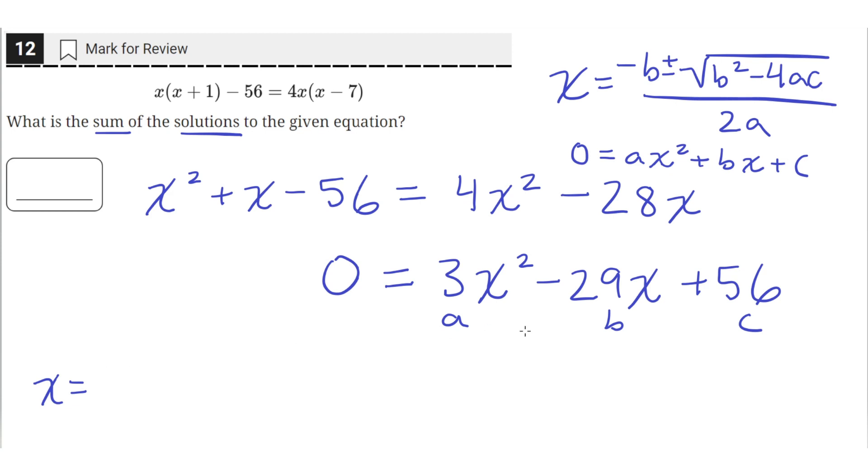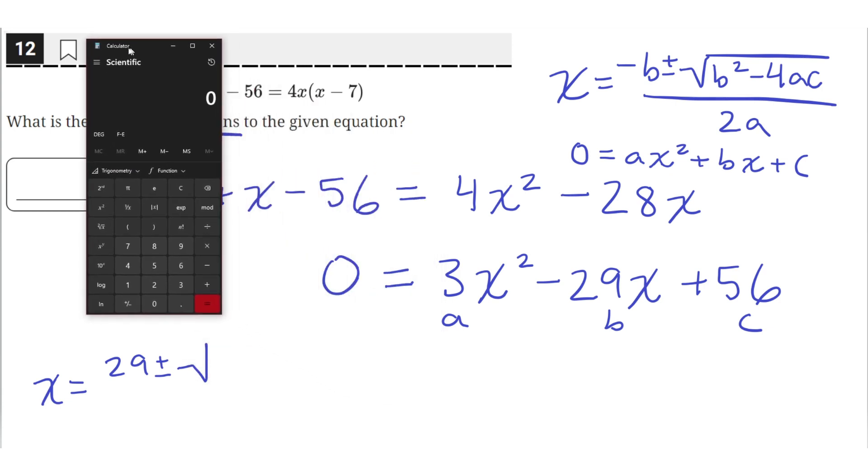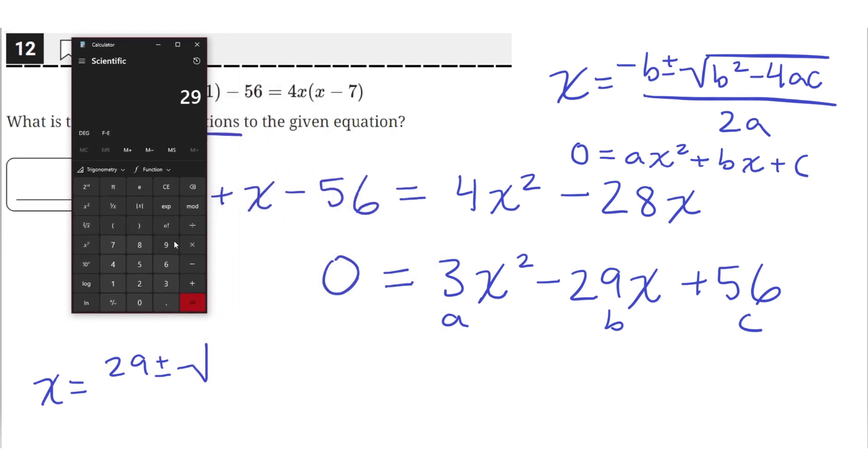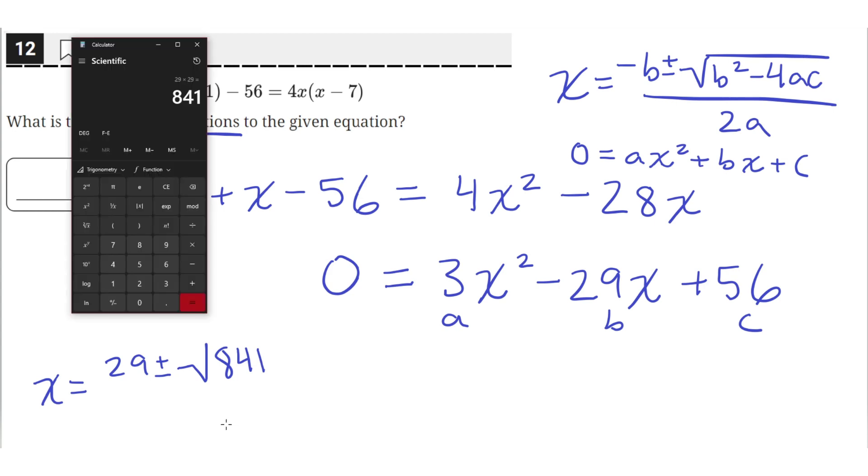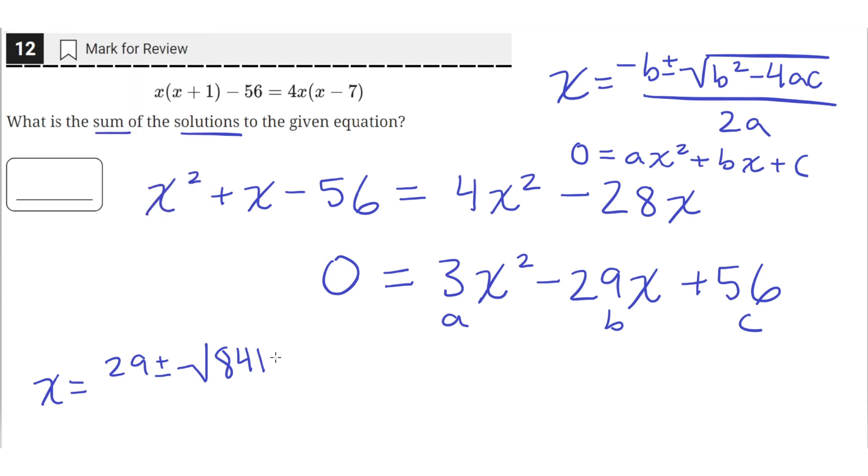Negative b, so negative of negative 29 is just 29 plus or minus square root of b squared. Using our calculator, 29 squared equals 841. Then we have to subtract 4 times ac, so that will be 4 times 3 times 56. And that will be all over 2a. Since a is 3, 2 times 3 is 6.